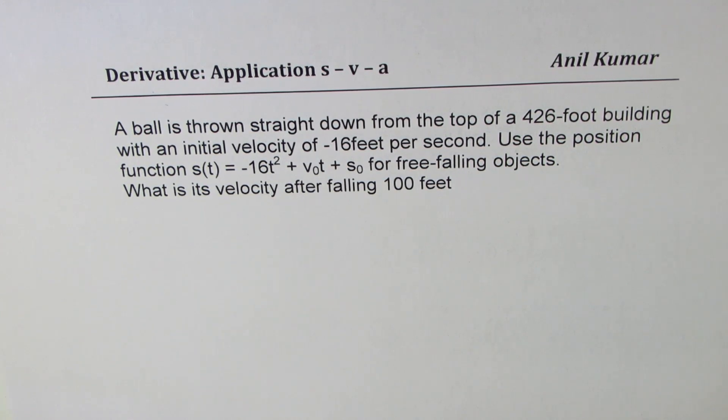The question here is: a ball is thrown straight down from the top of a 426 foot building with an initial velocity of minus 16 feet per second. Use the position function s(t) = -16t² + v₀t + s₀ for free falling objects. What is the velocity after falling 100 feet? So that's the question for you.